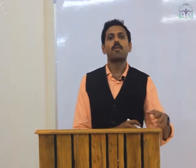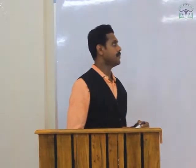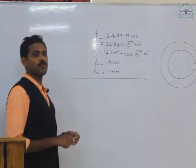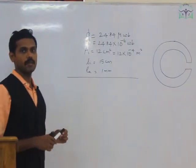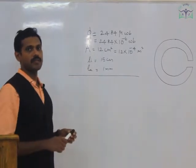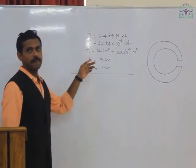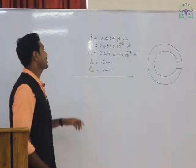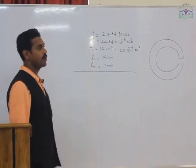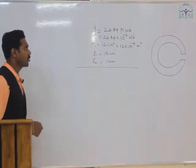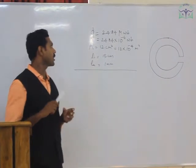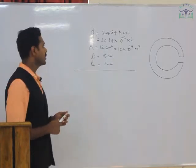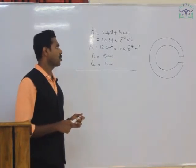We shall solve this problem relating to the magnetic circuit. It is an important question usually asked in university examinations. The following data are given: flux φ = 24.84 µWb, that is 24.84 × 10⁻⁶ Wb; area A = 12 cm², which equals 12 × 10⁻⁴ m².